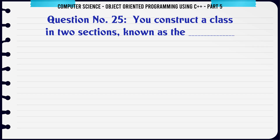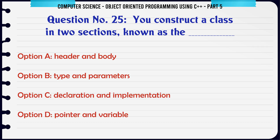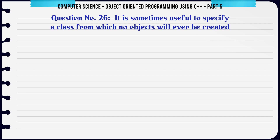You construct a class in two sections known as the. A. Header and Body. B. Type and Parameters. C. Declaration and Implementation. D. Pointer and Variable. The correct answer is: Declaration and Implementation.